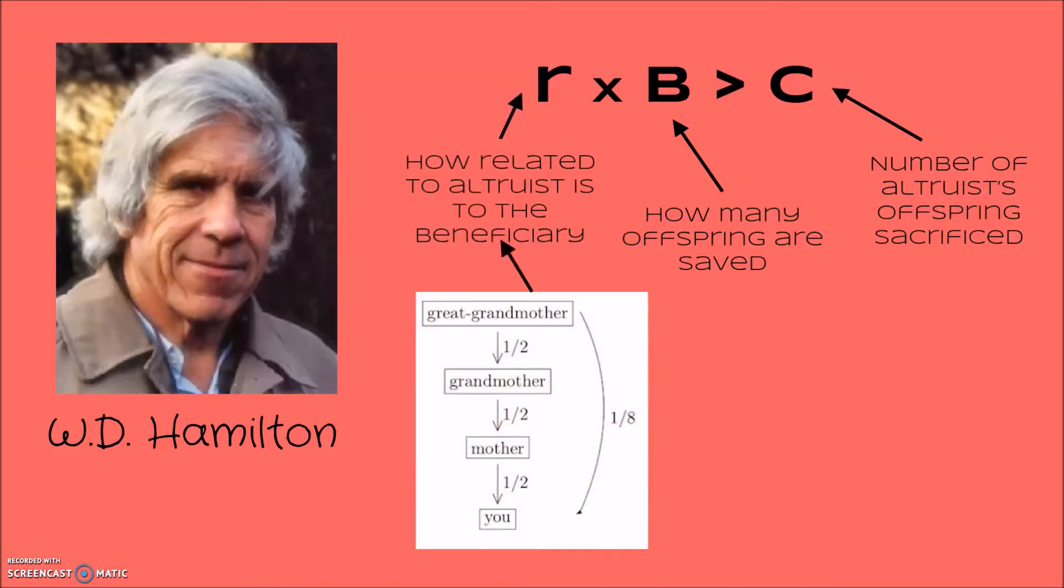Relatedness is the probability that a gene in the altruist is shared by the potential recipient of the altruistic behavior. The more distantly related the members of a population are to the altruistic donor, the donor sees less value in sacrificing itself. The coefficient of relatedness, or R, can be calculated based on generational differences. Because of the separation of homologous chromosomes and meiosis, each generation of offspring receives 50% of the genetic material of each parent.